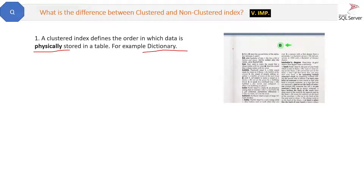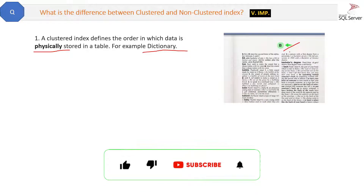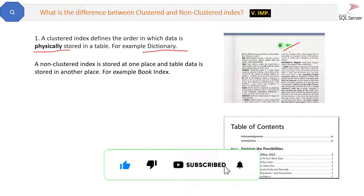In a dictionary, the data 'B' is also a part of the data itself, but it is physically stored in order. This is an example of a clustered index — the dictionary is an example of a clustered index.